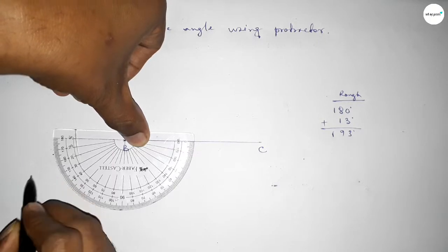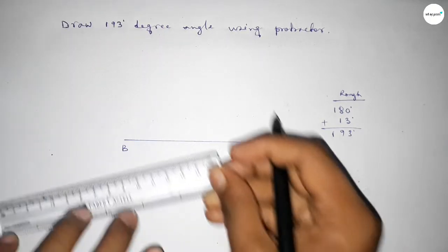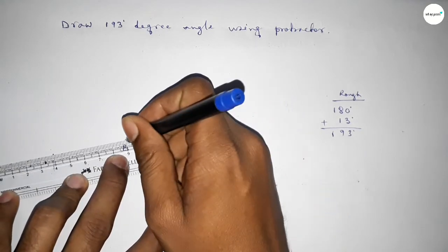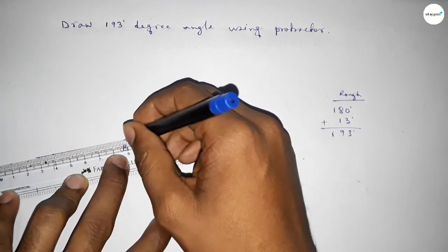So this is an extra 13 degree angle. By adding 13 degree angle with 180 degrees, we can get 193 degree angle.